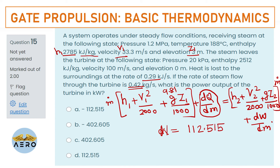Remember: when using a turbine, use the positive sign; if given a compressor, use a negative sign. If you make a slight sign mistake, you will get a different answer. The right answer is 112.515 kW.